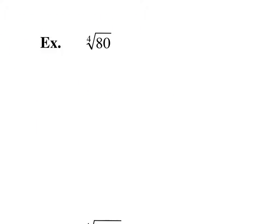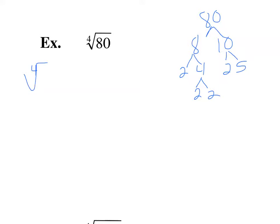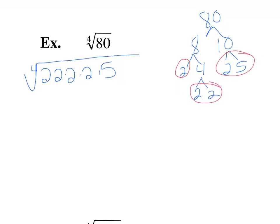We're looking for the fourth root of 80. Using the tree on 80: 8 times 10, 10 is 2 times 5, 8 is 2 times 4, and 4 is 2 times 2. So we have 2 times 2 times 2 times 2 times 5 from the tree. My index is 4, so I'm looking for a group of 4 — and there it is. A 2 can come out to the outside, but that 5 has to stay inside.